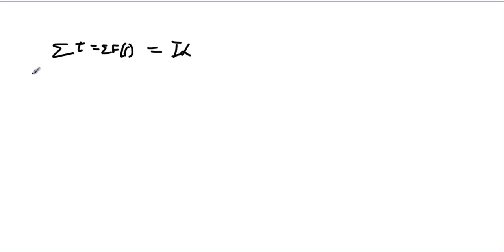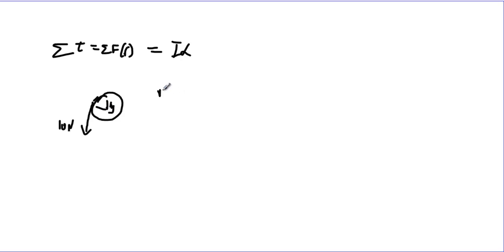Let's say we have a big heavy pulley — not necessarily a uniform disk so we don't know its moment of inertia. There's a big rope wrapped around it and you pull down with a force of 10 newtons. The pulley has a mass of 1 kg and a radius of 0.1 meters. We want to find the moment of inertia of that pulley, but we need one more piece of information.